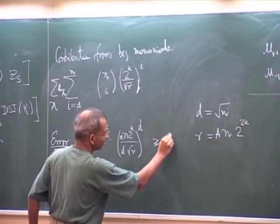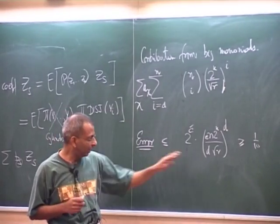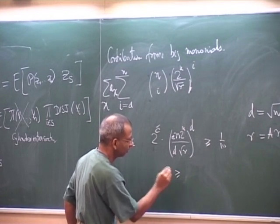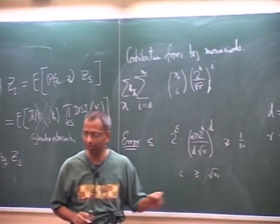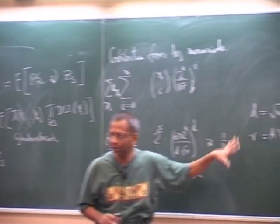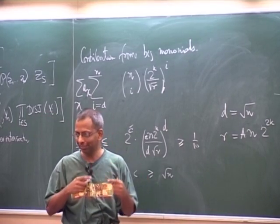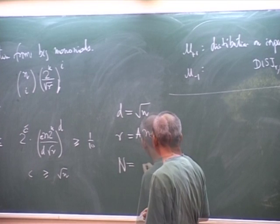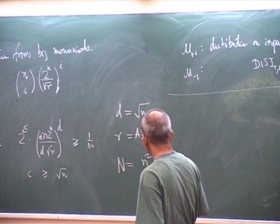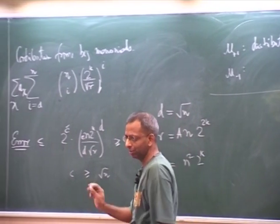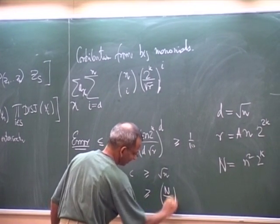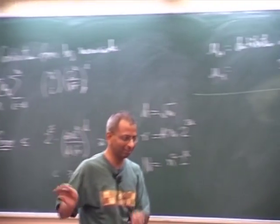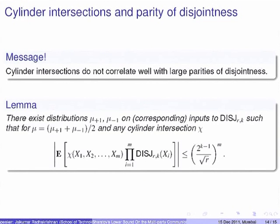To avoid that contradiction, c must be large enough that the error bound does not fall below one-tenth. Working through the parameters: D gives square root n, R gives another square root n, and combining with the 2^k factor, the size of the disjointness problem (capital N) is about n-squared times 2^k. Expressing c in terms of capital N, you get something like N to the one-fourth divided by 4^k, which matches the claimed lower bound.